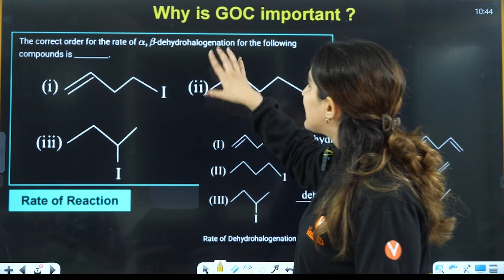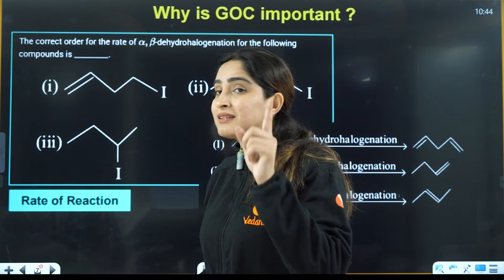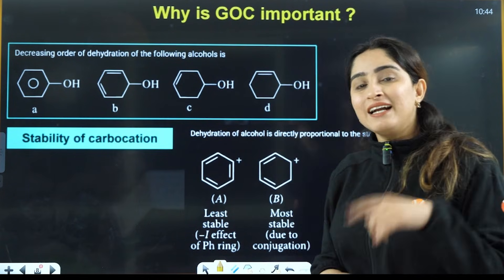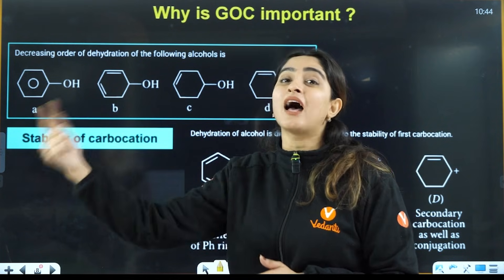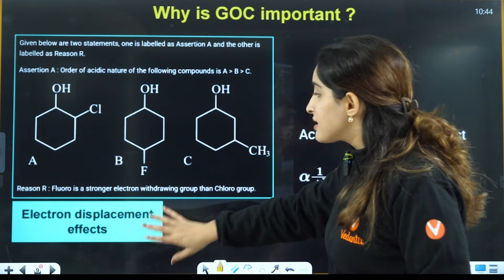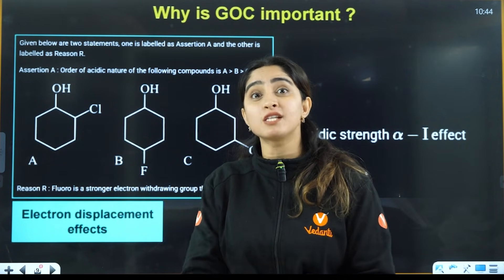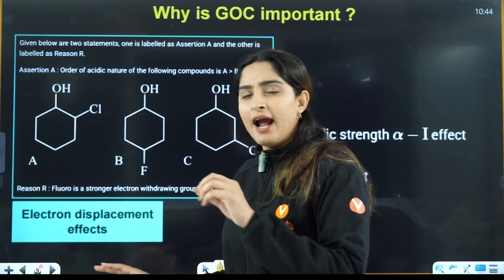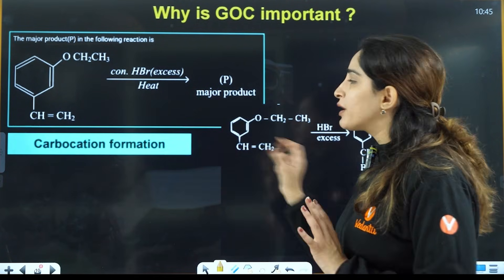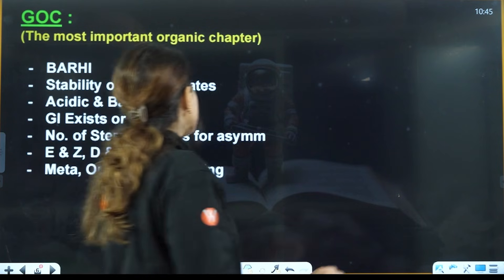Here they have asked about alpha-beta dehydrohalogenation reaction and the rate of that reaction. You can answer that only on the basis of stability of intermediates, which you learn from GOC. Another question is on dehydration — in dehydration, you have formation of carbocation, and you can answer it only based on stability of carbocation or rearrangement of carbocation. Direct questions from GOC are also asked — in one shift, we have seen four questions from GOC on acidity, basicity, and isomerism. And again, in another question involving a reagent with carbocation formation and rearrangement — you can only understand that if you have done that particular part of GOC.